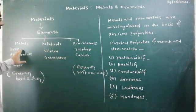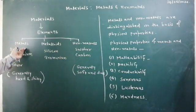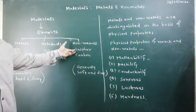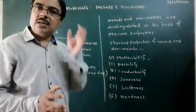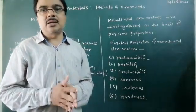So, on the basis of the hardness property, we can say metals are hard materials and non-metals are generally soft materials. Now, I am using the word 'generally' again - why generally?